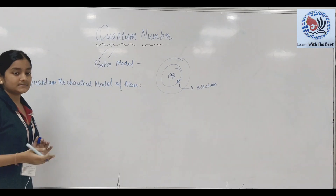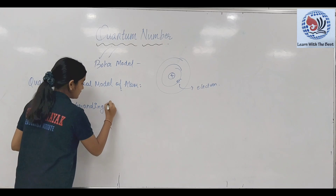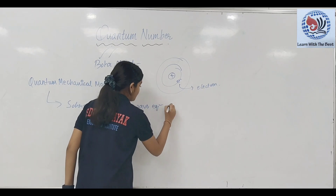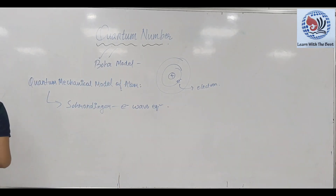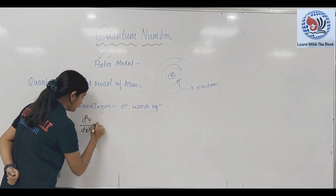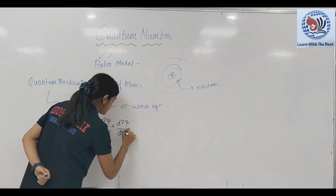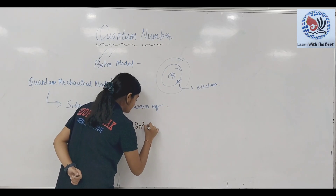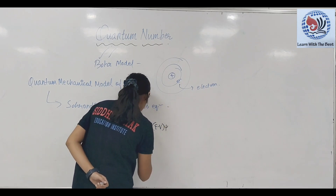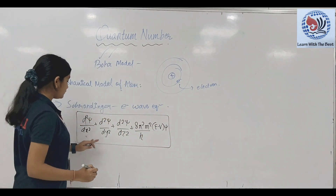This is why we have a new scientist — Erwin Schrödinger. He has an equation called the Electron Wave Equation. This equation is: d²ψ/dx² + d²ψ/dy² + d²ψ/dz² + 8π²m(E-V)ψ/h² = 0. This equation has given us three axes — x axis, y axis, z axis.